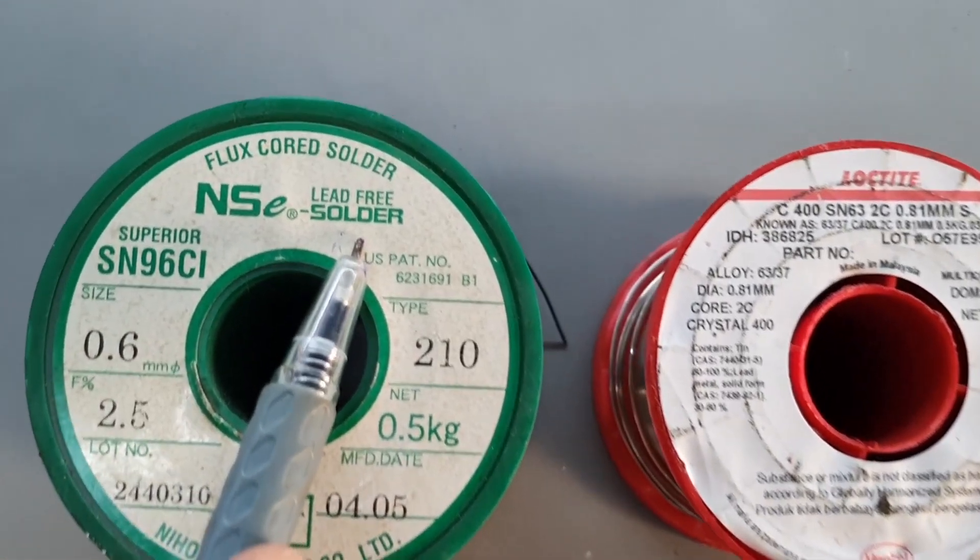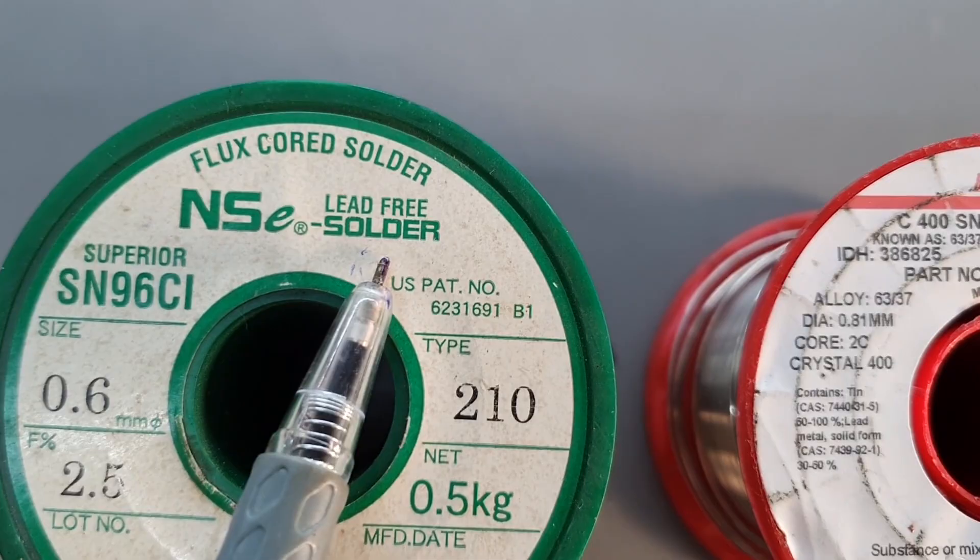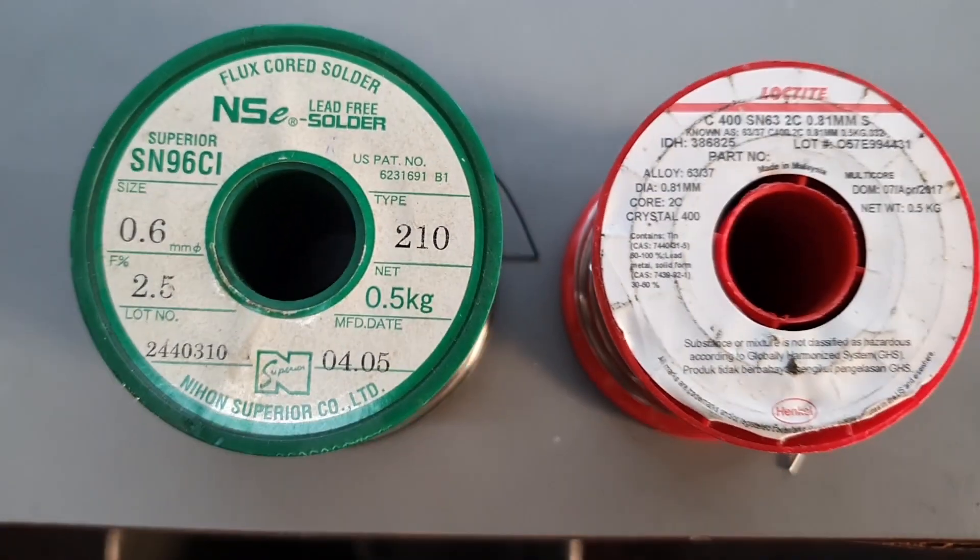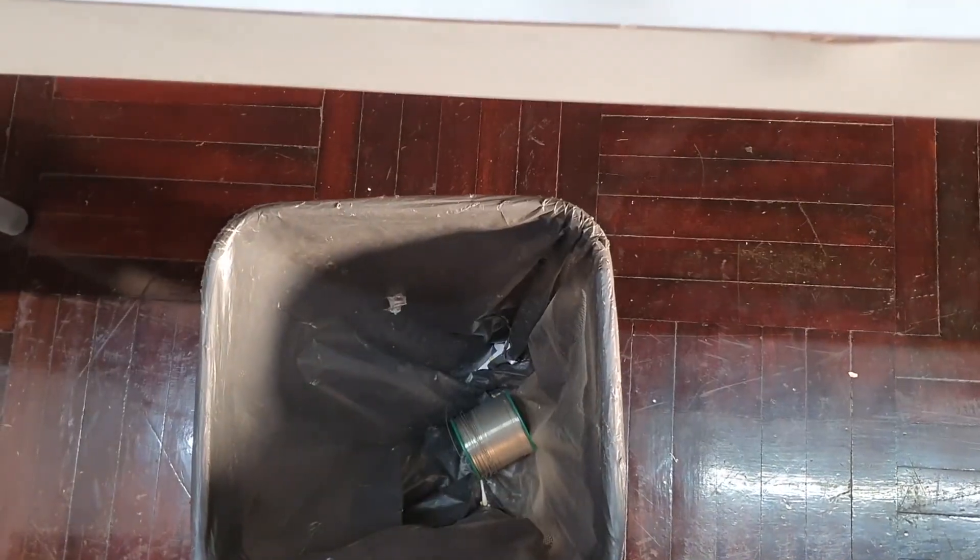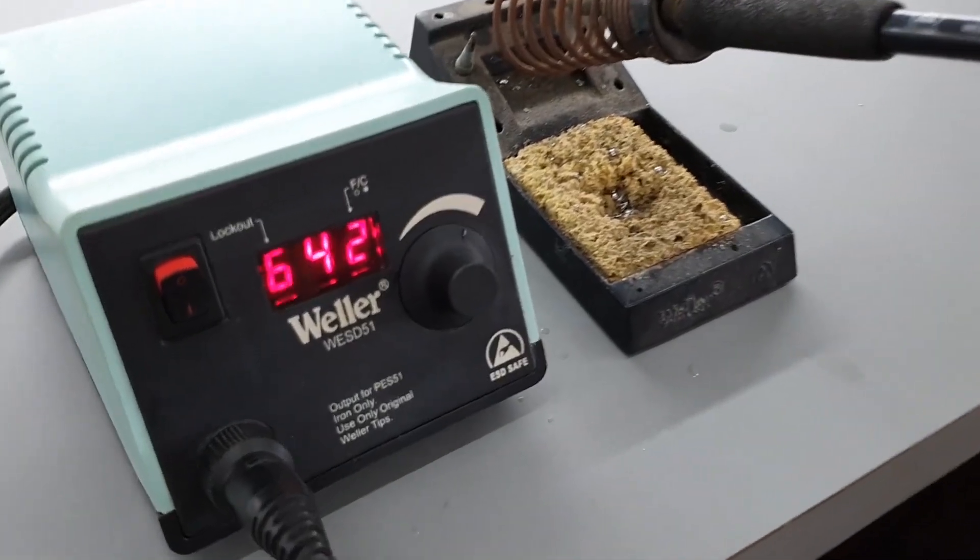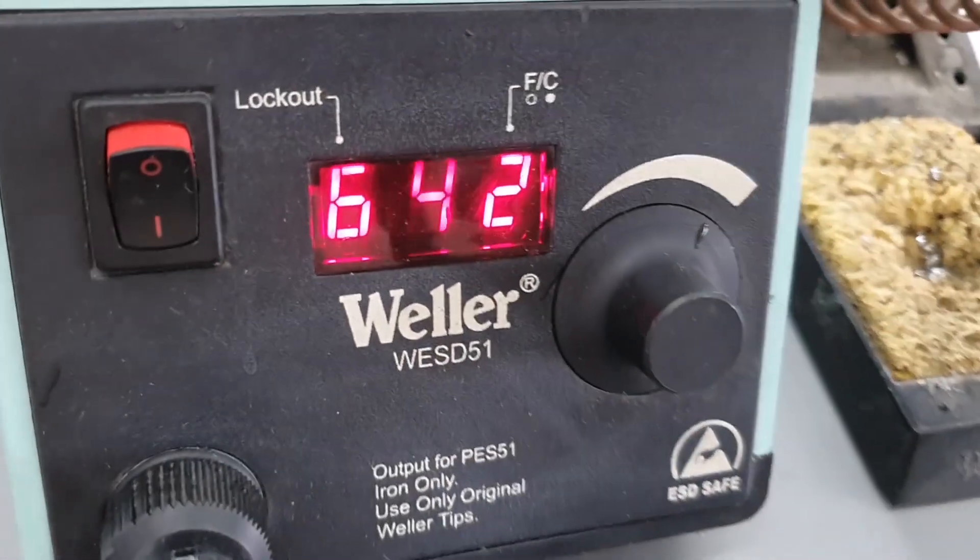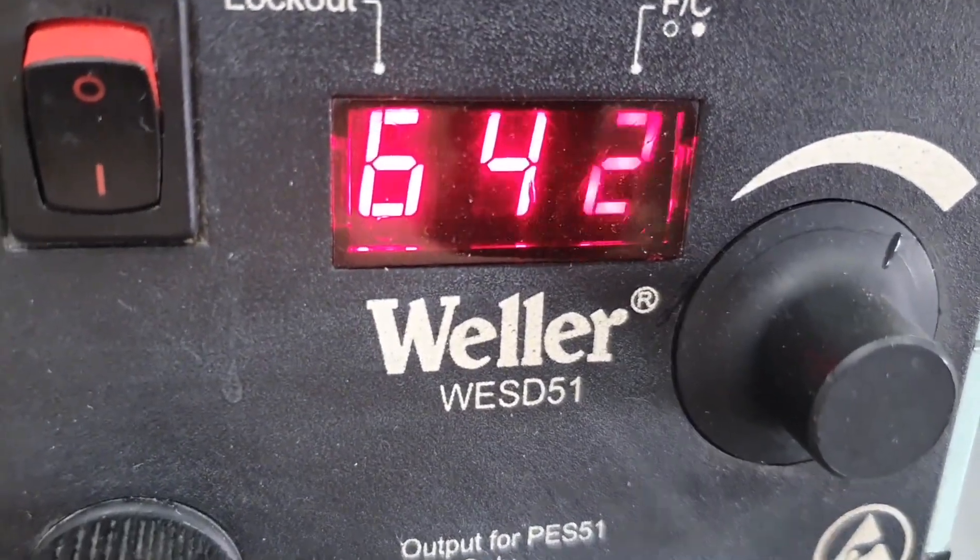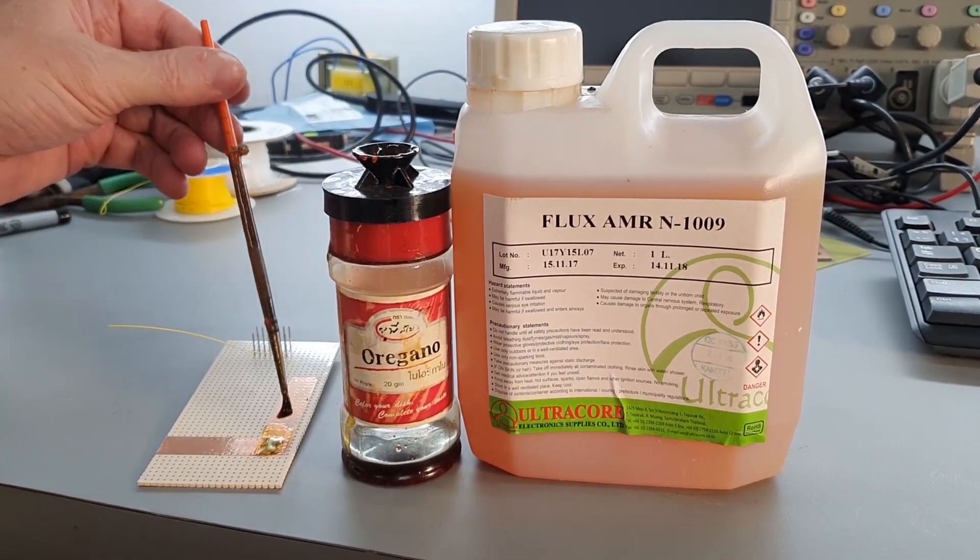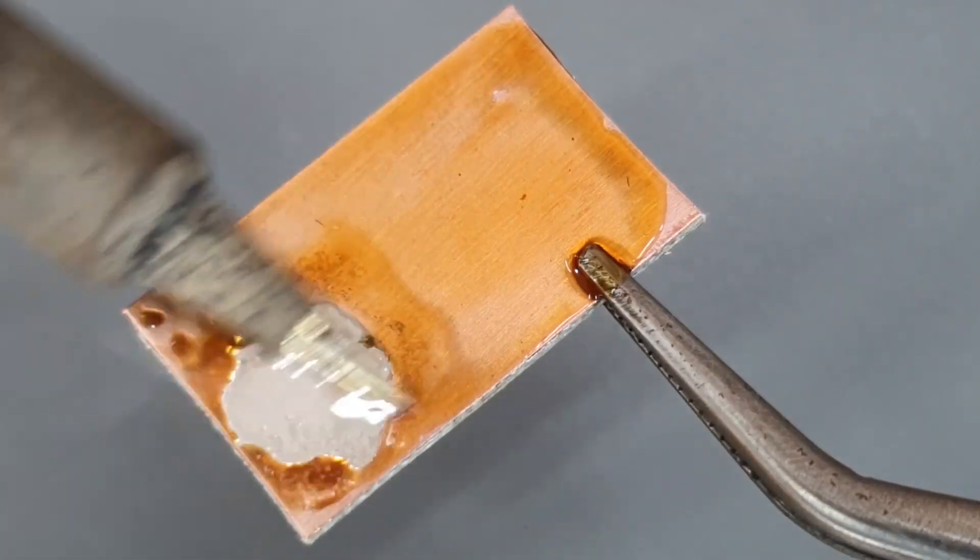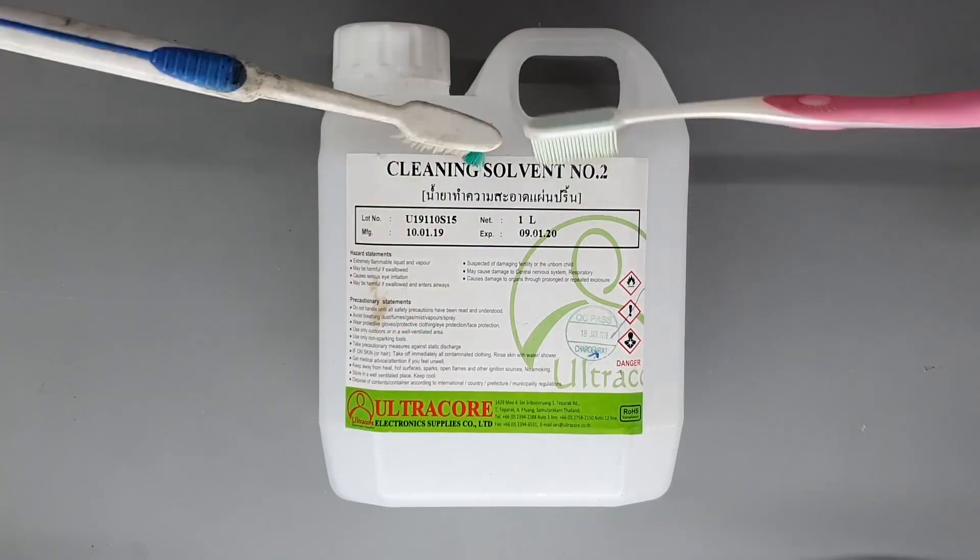Use Rosin Core 60/40 tin lead solder for prototypes. It just performs so much better when doing hand work than the lead free stuff. A temperature controlled soldering iron is a must. Overheating is the quick way to ruin stuff. Flux is your friend. It always improves the behavior of any soldering operation.